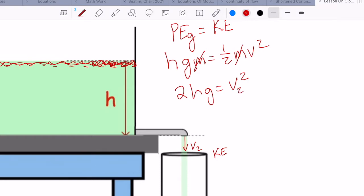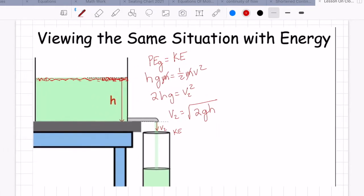We're calling our velocity V2. So we get V2 equals the square root of two times gravitational field times height. The same exact result we got the other day. The difference is this time we're viewing it from the standpoint of energy.